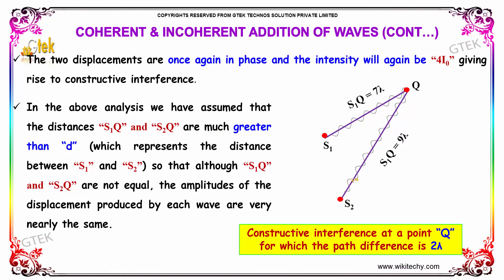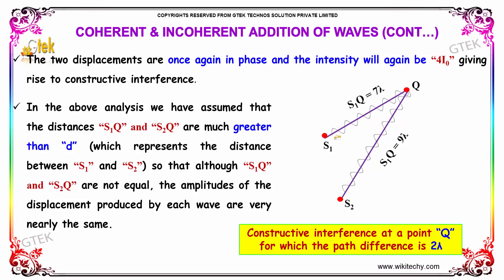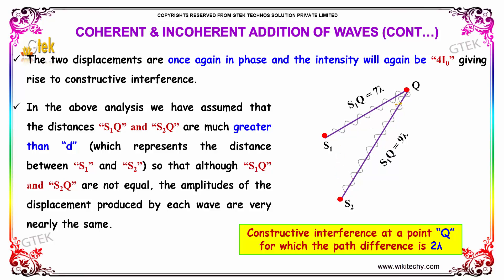The two displacements are once again in phase and the intensity will again be 4I₀, giving rise to constructive interference. In the above analysis, we have assumed that the distances S1Q and S2Q are much greater than d, which represents the distance between S1 and S2, so that although S1Q and S2Q are not equal, the amplitudes of the displacement produced by each wave are very nearly the same.